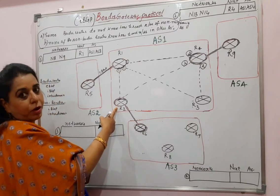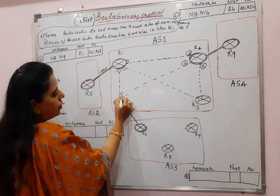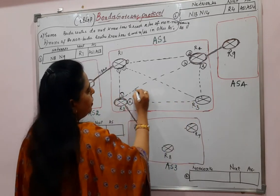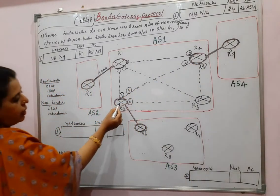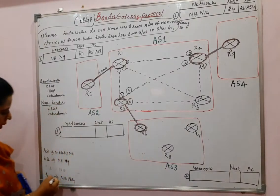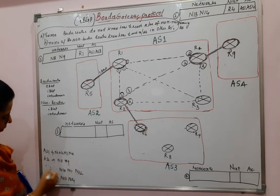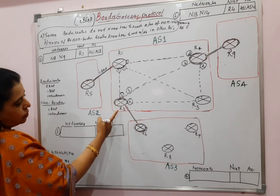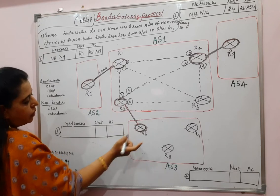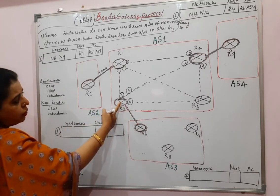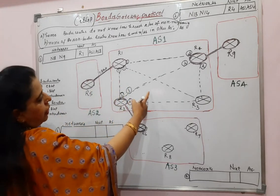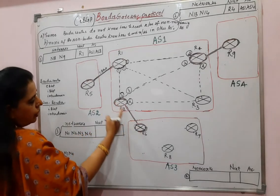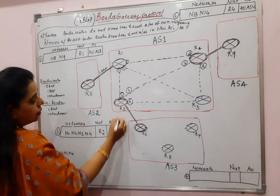Similarly, there is one more border router in AS1 — R2. R2 will also establish internal sessions with R1, R3, and R4. Message number 3 is from R2, which is connected to the border router of AS3. AS3 has N10, N11, and N12. R2 conveys to its internal routers that you can reach networks N1, N2, N3, and N4 via R2, with the autonomous systems involved being AS1 and AS3.